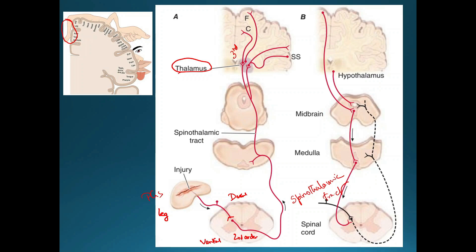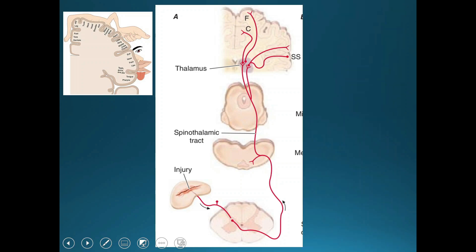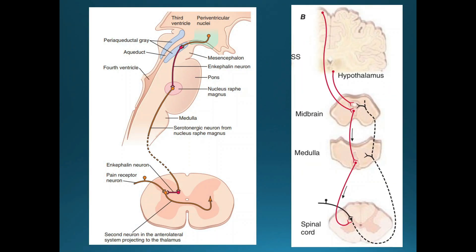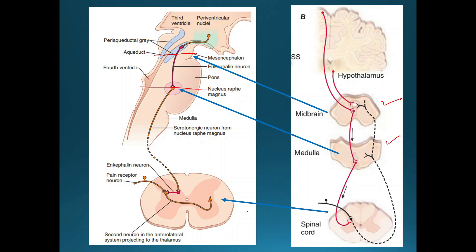There is also a descending pathway of pain, also called gating of pain. It starts from the midbrain. Looking at this sagittal section diagram, here is our midbrain and this is the spinal cord. We have the periaqueductal gray in our midbrain — it is a set of neurons which projects to the medulla and forms in the nucleus raphe magnus. From the nucleus raphe magnus there is a descending pathway going towards the spinal cord. These are serotonergic 5-HT or norepinephrine neurons.